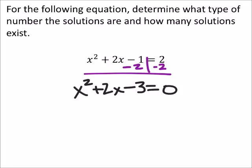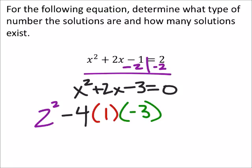And so the formula gives us b squared, so we're going to take 2 squared minus 4 times a, which is 1, times c, which is negative 3.